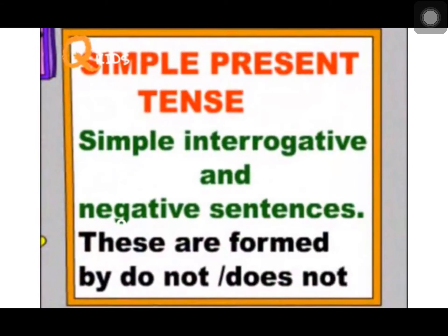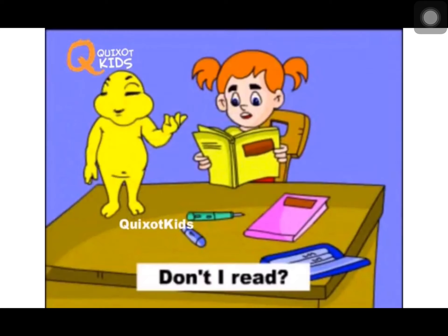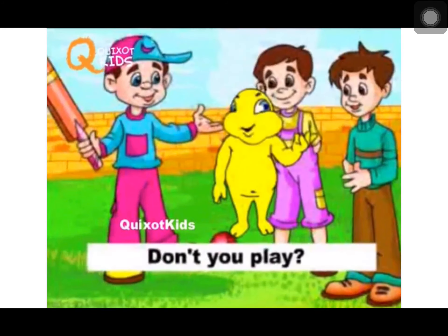Simple interrogative and negative sentences are formed by using do not or does not plus subject plus verb. For example: do or does not plus subject plus first form of the verb. Don't I read? Doesn't he stand? Don't you pray?